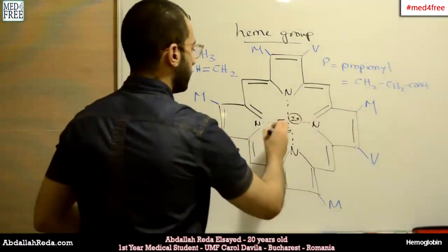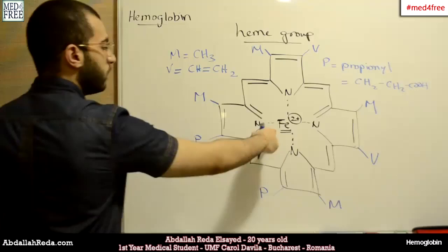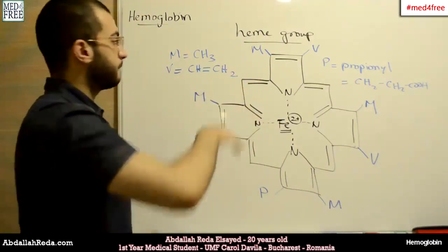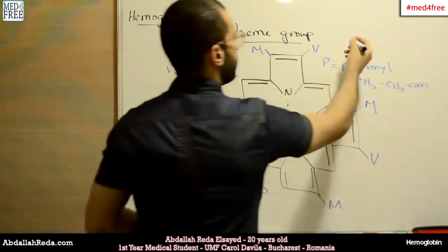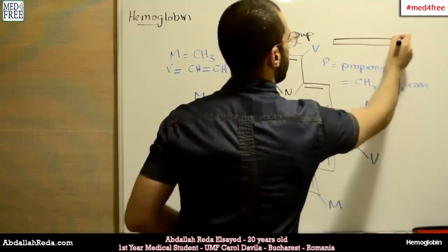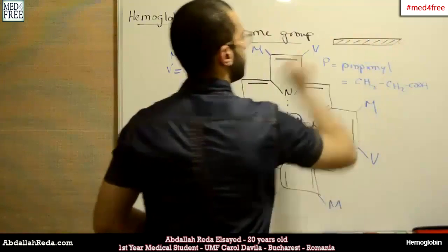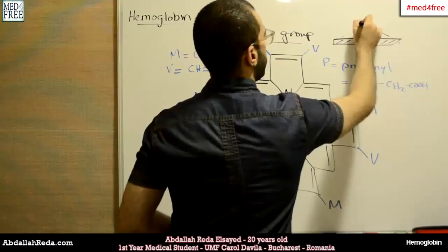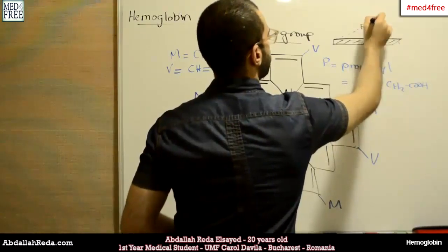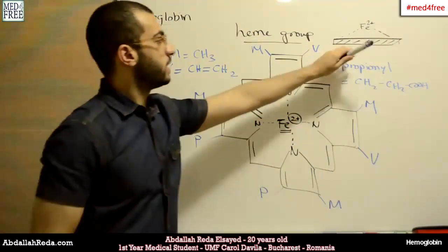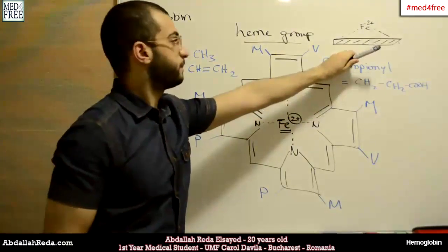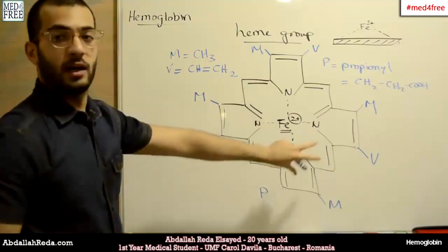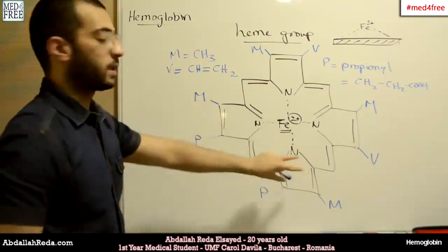Bound to the iron, we need to know that the iron is found above the plane of the heme group. This position is called the tension state, and it is when the heme group does not bind any oxygen — it is free of oxygen.